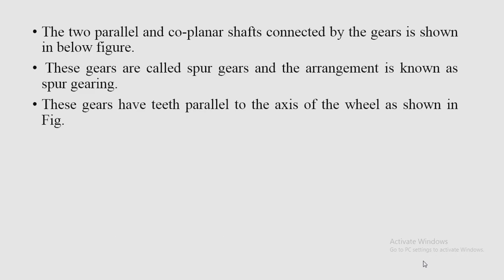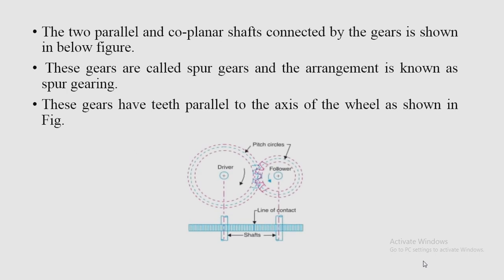Two parallel and coplanar shafts connected by gears are called spur gears and the arrangement is known as spur gearing. The shaft is named as driver and shaft B is named as follower, following the motion of wheel A. In the figure, the pitch circle is shown. Spur gears have teeth parallel to the axis of the wheel.